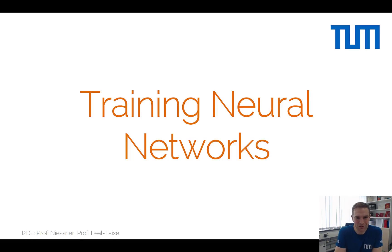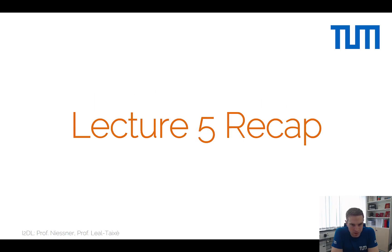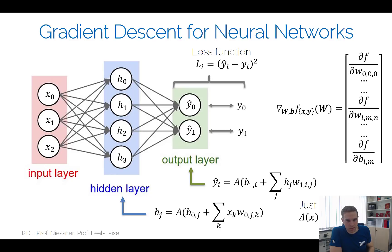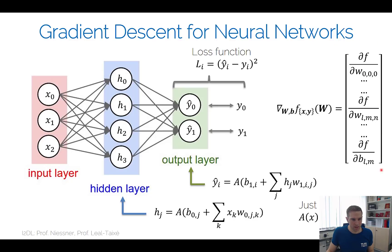Welcome to the introduction to deep learning lecture. Today we're going to look at the practical aspects of training neural networks. We've heard a lot about the theory in recent lectures, so I wanted to start with a quick recap of how optimization works — specifically how we use gradient descent for neural networks, optimizing for the optimal values of weights and biases to define our model.